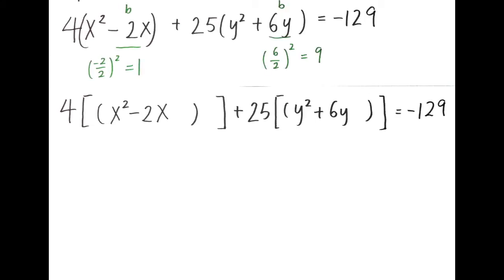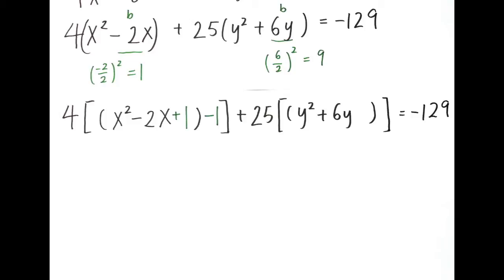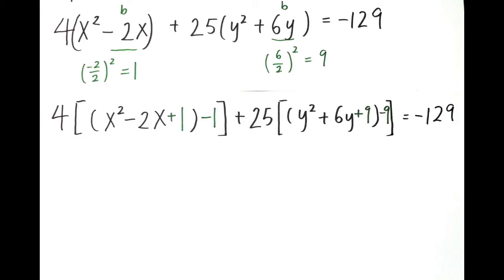6 is the b of the y equation, so c equals (6 divided by 2) squared, which equals 9. Now we can put c inside of each expression to create a trinomial. When we add 1 to the equation, we need to remember to also subtract 1. For the y trinomial, we need to add 9 and also subtract 9.